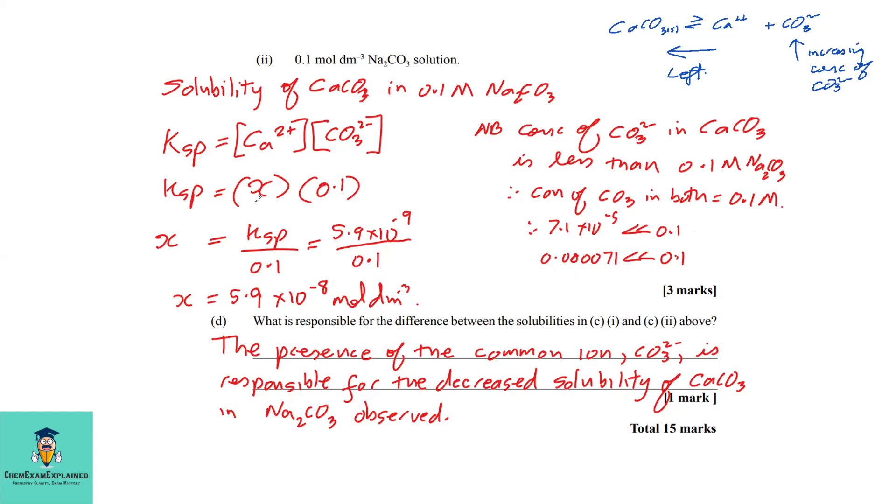We use 0.1 as the concentration of the carbonate ions and use the unknown x to find the solubility when 0.1 M sodium carbonate was added. Making x the subject: x = Ksp/0.1 = 5.9 × 10⁻⁹ / 0.1, and we find the new solubility to be 5.9 × 10⁻⁸ mol/dm³.